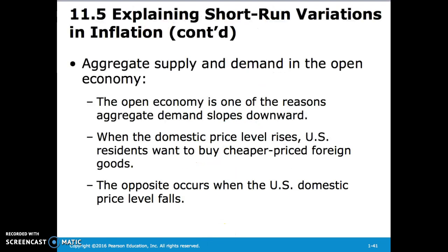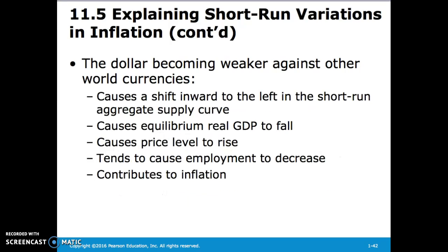The open economy is one of the reasons aggregate demand slopes downward. When the domestic price level rises, U.S. residents want to buy cheaper-priced foreign goods, and the opposite occurs when the domestic price level falls. When the dollar becomes weaker against other world currencies, it causes a shift inward to the left in the short-run aggregate supply curve, causing equilibrium real GDP to fall and price levels to rise, contributing to decreased employment and inflation.